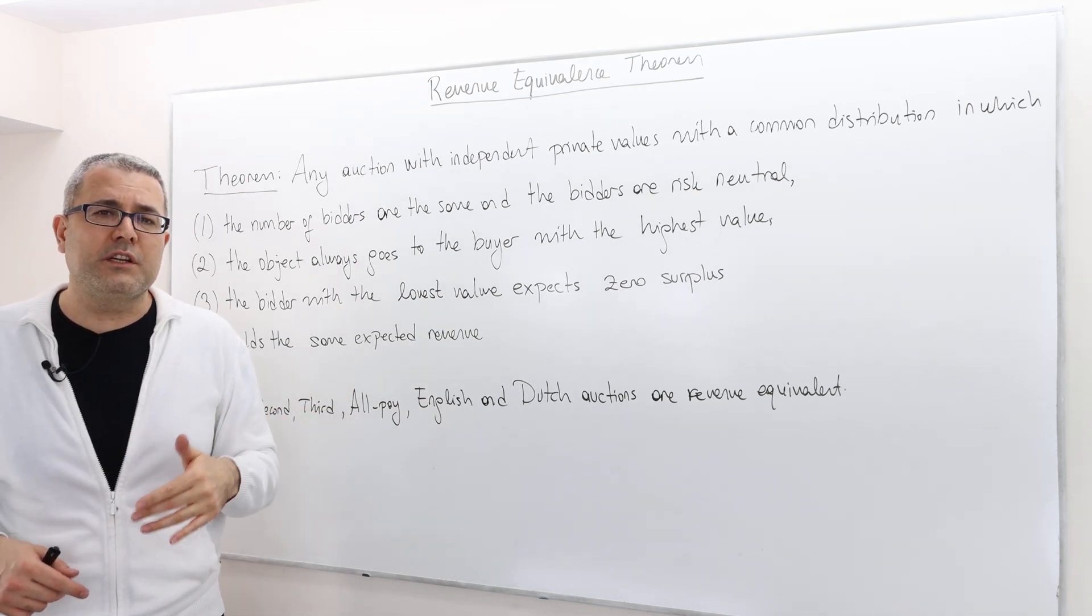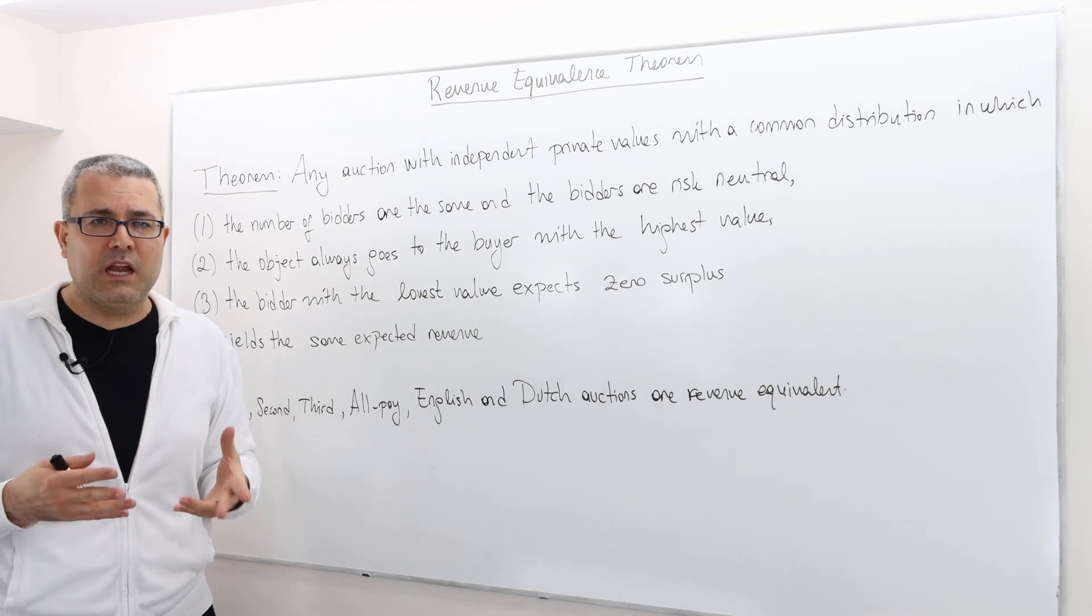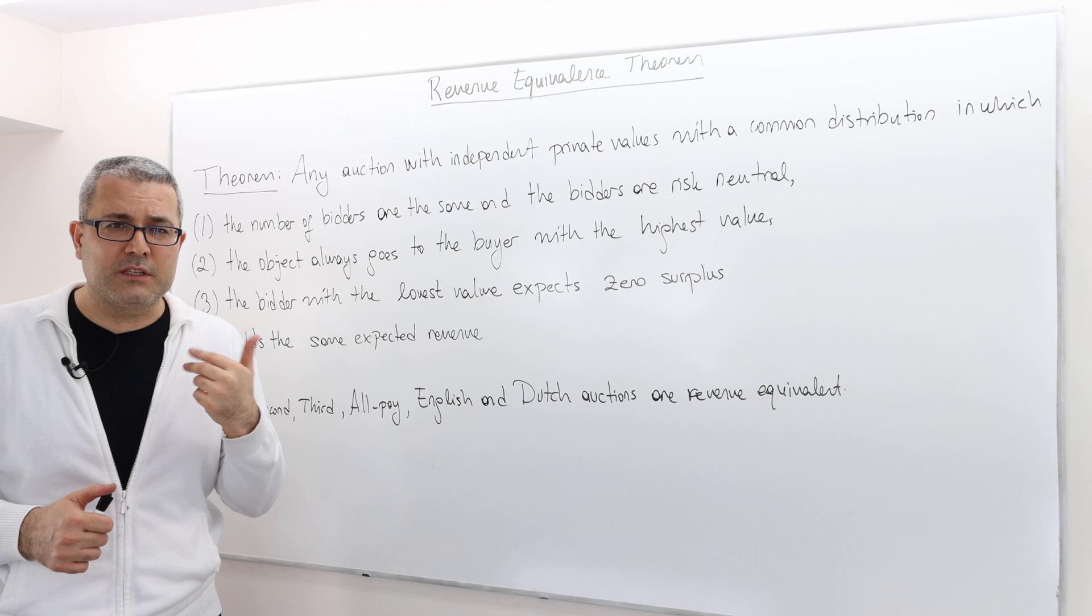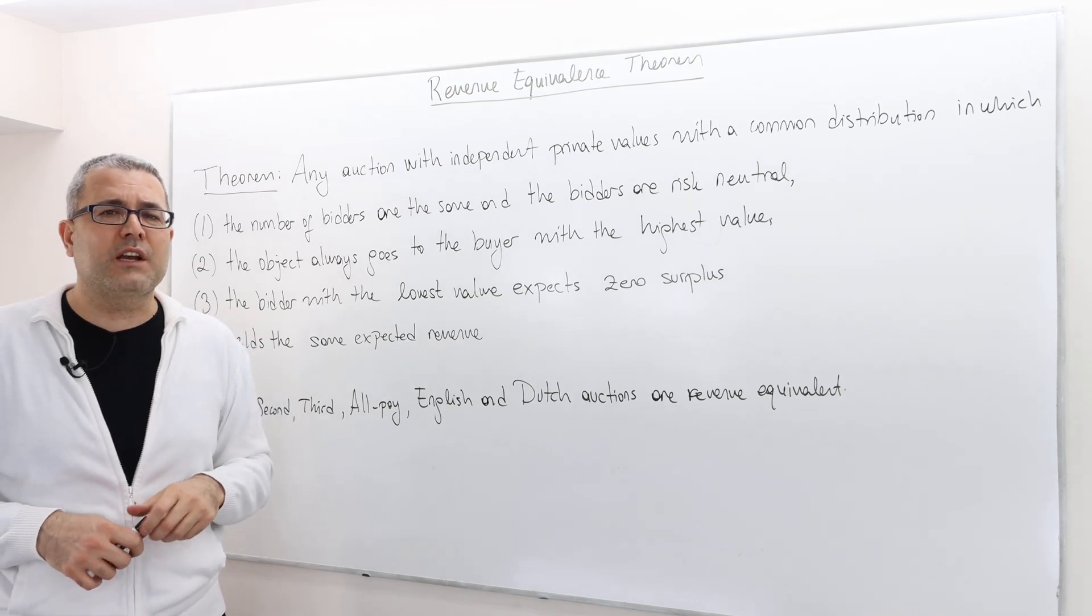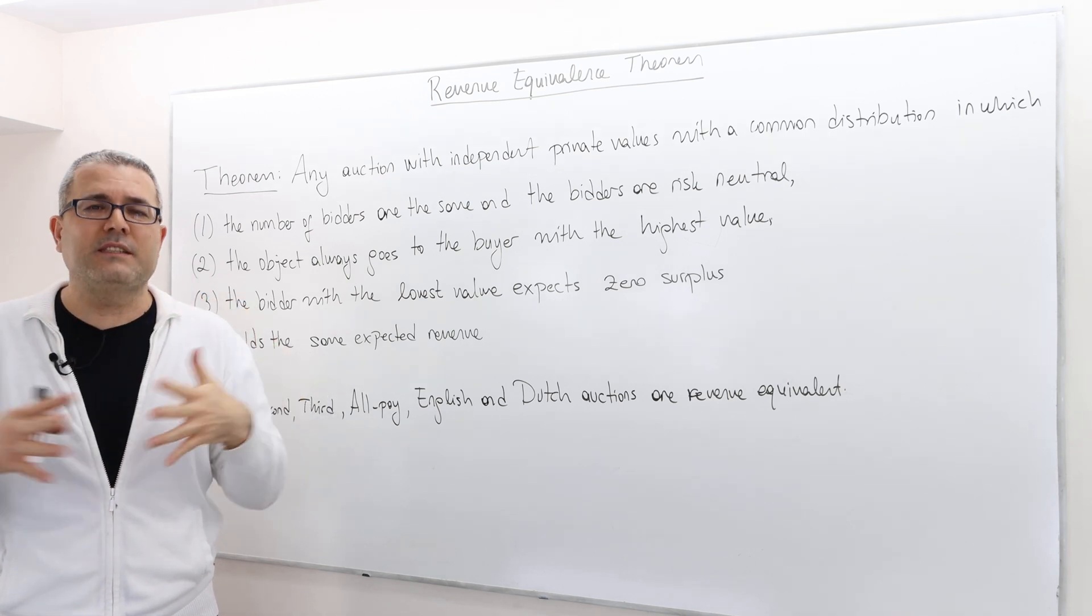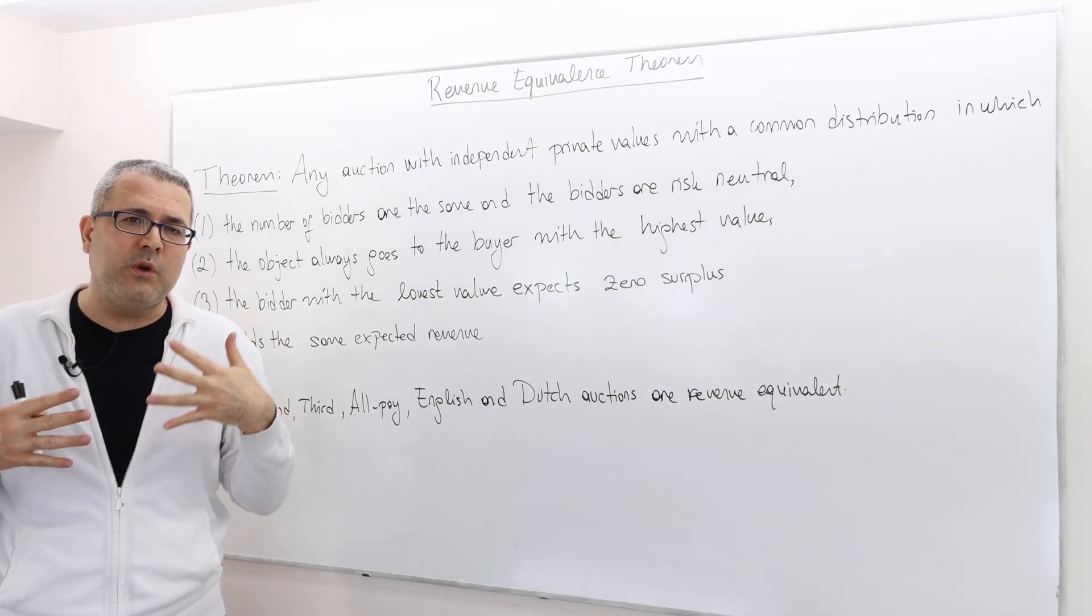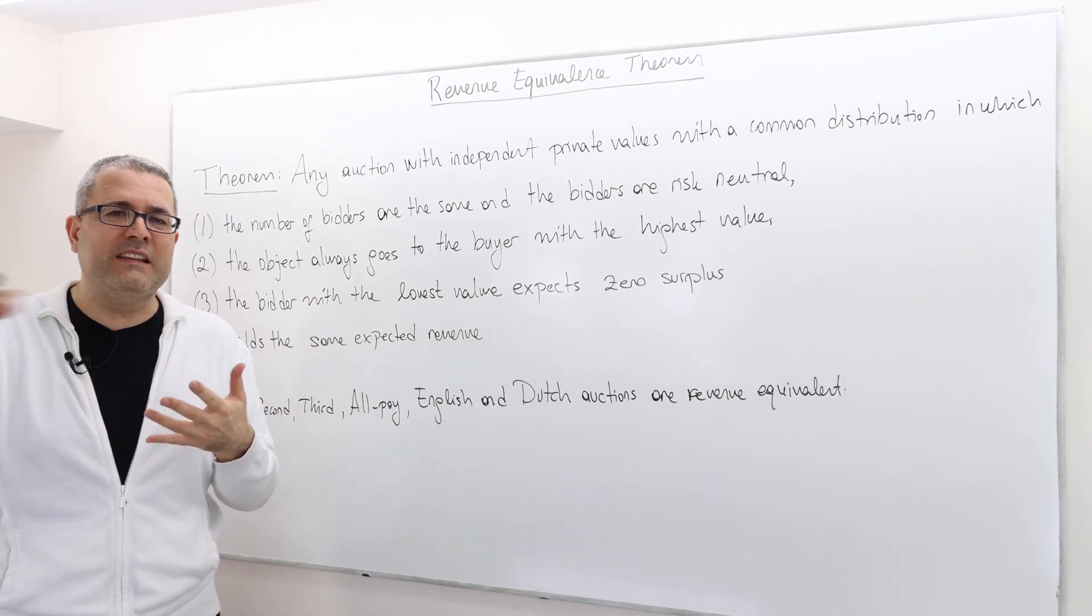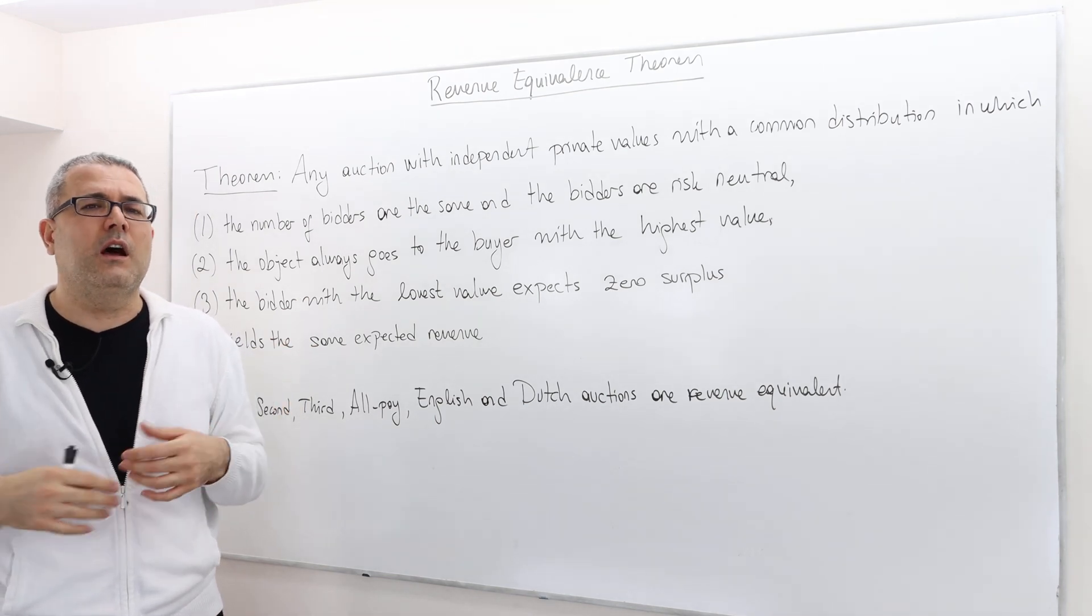So those auctions are efficient, but some auctions do not satisfy this property. For example, the Chinese auction, whatever you bid, everybody still has the likelihood of winning the object because your probability of winning is your bid divided by the sum of all bids.